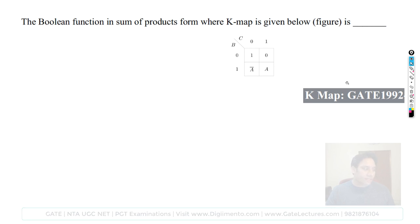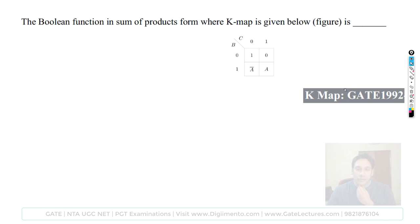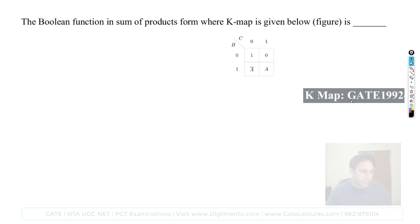The next question: the boolean function is a sum of products where the K-map is given. In this K-map they are using a variable entrant map — a three-variable function converted to a two-variable function using a variable entrant K-map. We will solve this function using two methods.